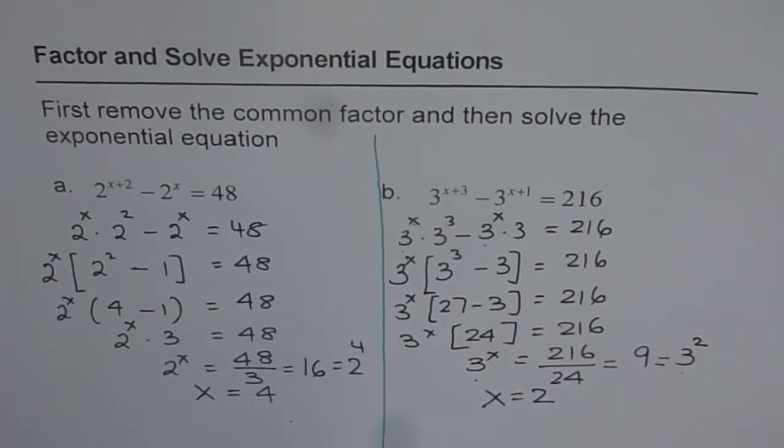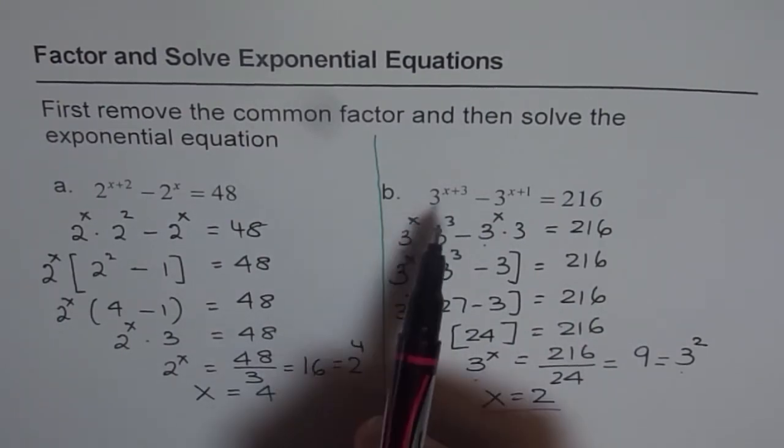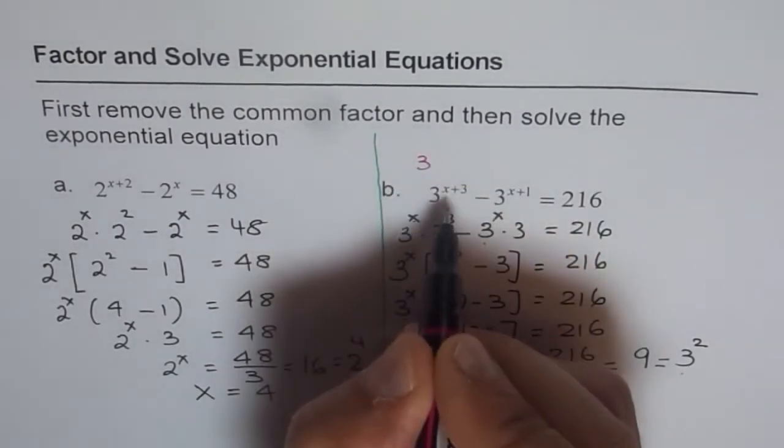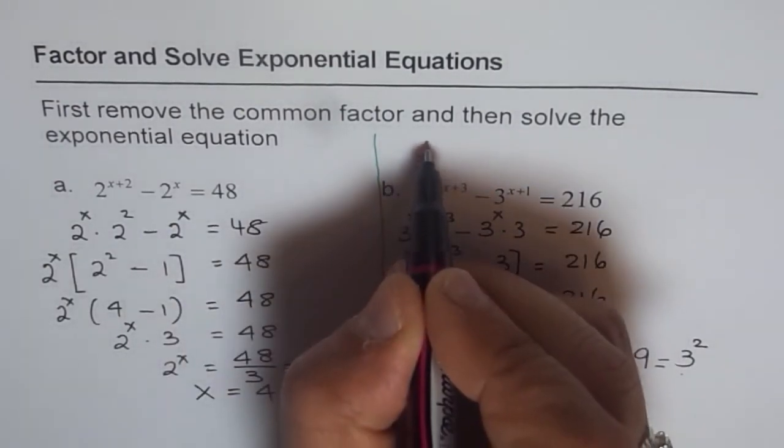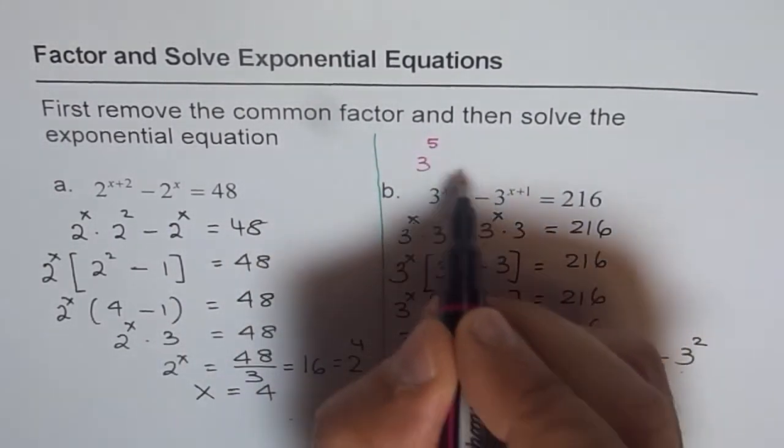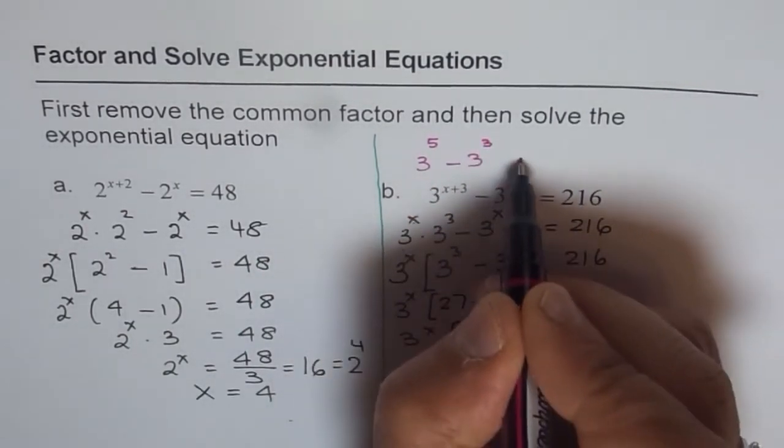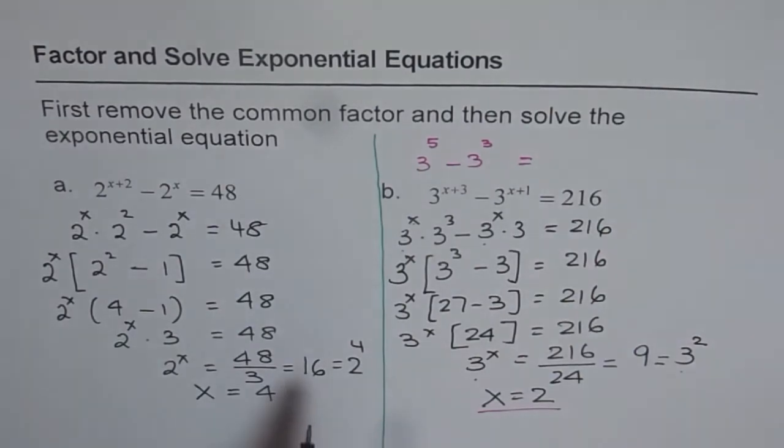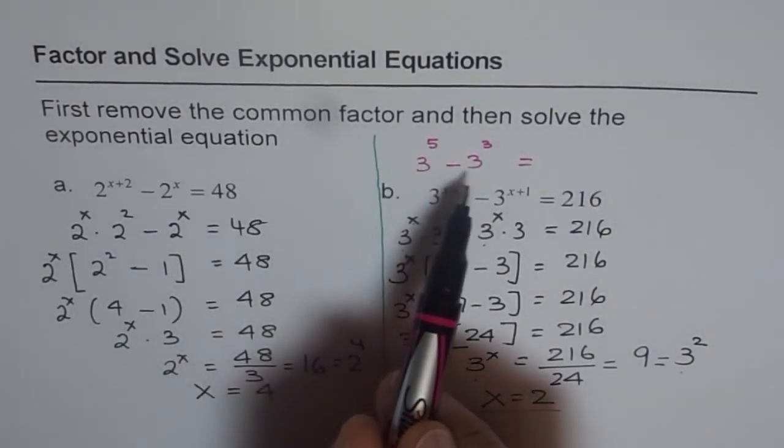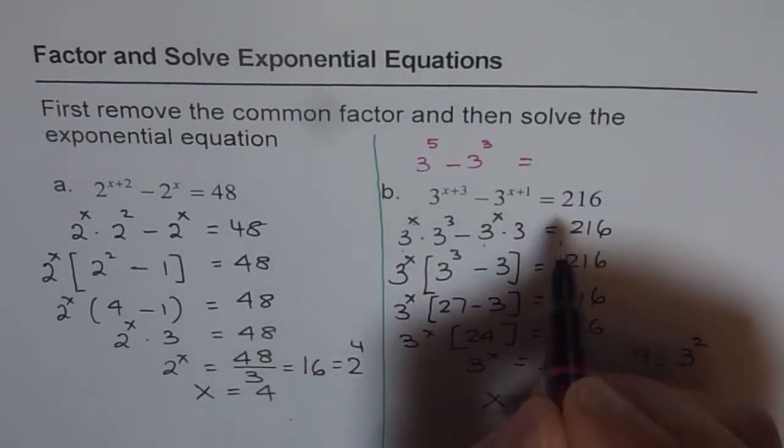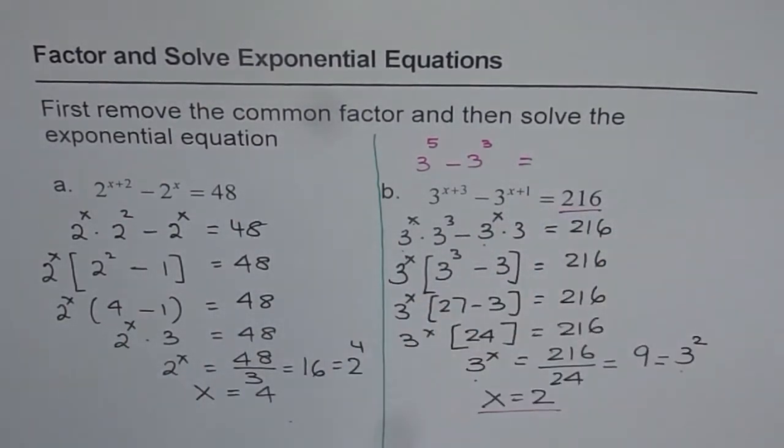Now let us check this one. x equals to 2. If I write x equals to 2 here, I get 3 to the power of 2 plus 3 is 5, minus 3 to the power of 2 plus 1 is 3. Do you see that? Now you can use your calculator. Do 3 to the power of 5 minus 3 to the power of 3, and then check if you really get 216. You should get it.